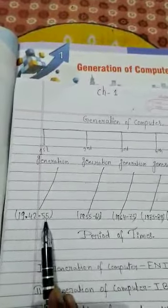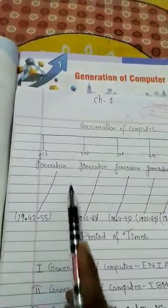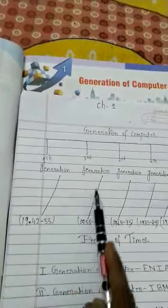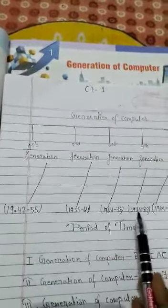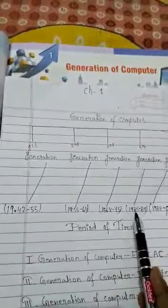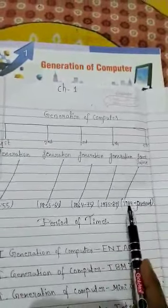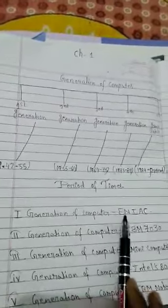You can see that year after year the generations continued: 1st generation till 1955, 2nd generation from 1955 to 1964, 3rd generation from 1964 to 1975, 4th generation from 1975 to 1989, and 5th generation from 1989 to present days.